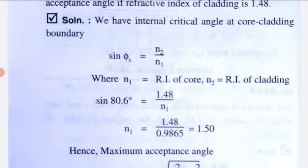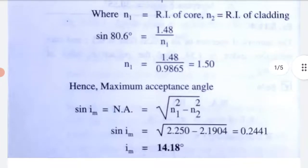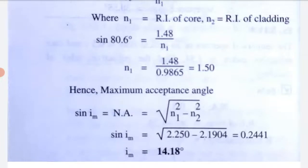To find the acceptance angle: the maximum acceptance angle M satisfies sin(M) = NA, where numerical aperture NA = √(N1² − N2²). So sin(M) = √(2.250 − 2.1904) = √0.2441. Therefore the maximum acceptance angle M = 14.18 degrees.